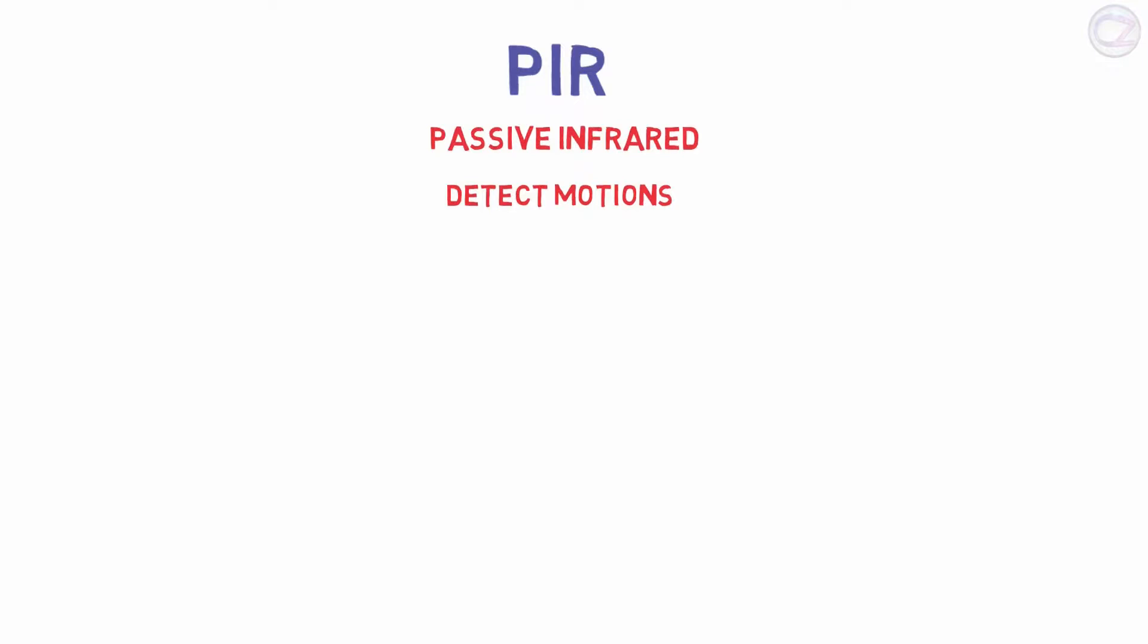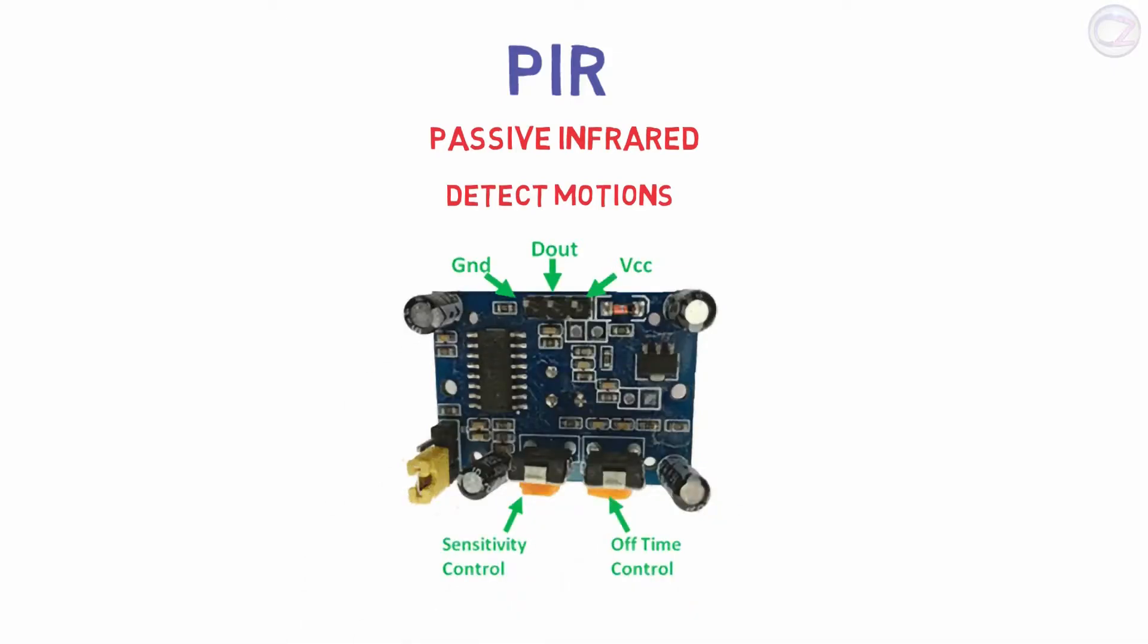Let's look at the pinout of this sensor. You can also see two presets on the sensor board—one preset for adjusting sensitivity and the other one is for delay time adjustment.